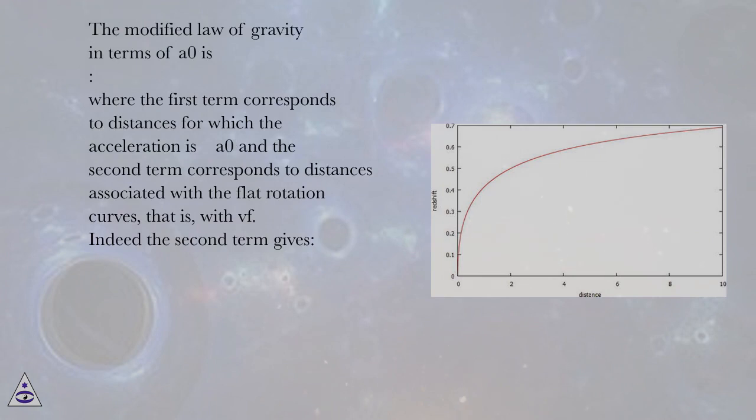The modified law of gravity in terms of A0 is given by an equation where the first term corresponds to distances for which the acceleration is greater than A0, and the second term corresponds to distances associated with the flat rotation curves, that is, with VF.